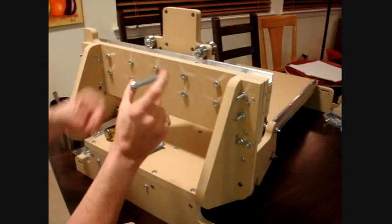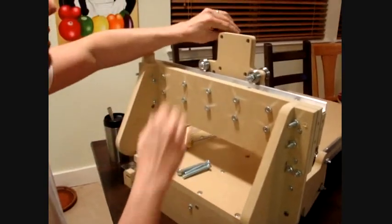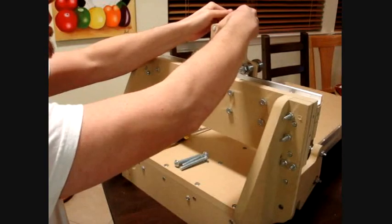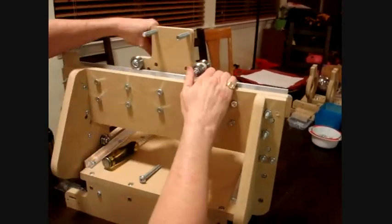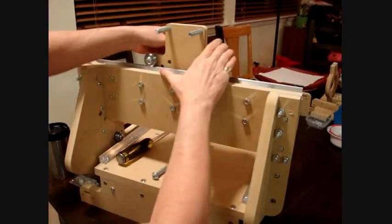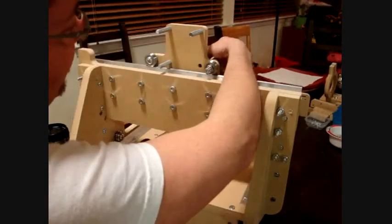So the first thing to do is get these longer ones. These are the 3-inch, 3-8 screws. Put them through these holes. They'll be really tight, very tight. This one will be really close to the rail.